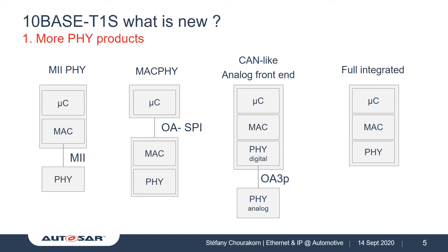One of the features of 10BaseT1S is to offer different types of PHY. We have the classic standalone PHY over an MII interface, but the Open Alliance is also specifying two other types: one for low-cost microcontrollers over SPI encapsulating a MAC, and the other is an analog front-end PHY over three pins, also known as CAN-like PHY. The last type, which will come later, is the fully integrated PHY in the microcontroller.